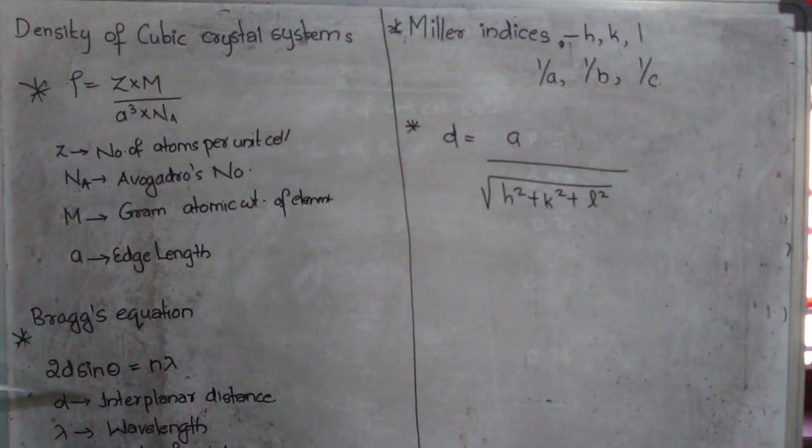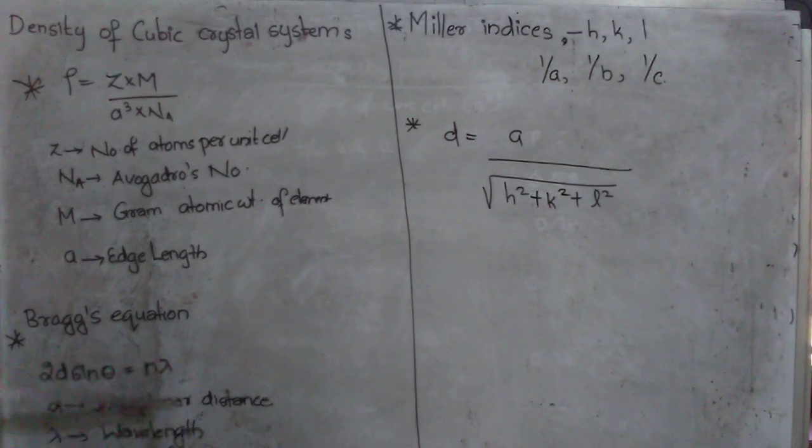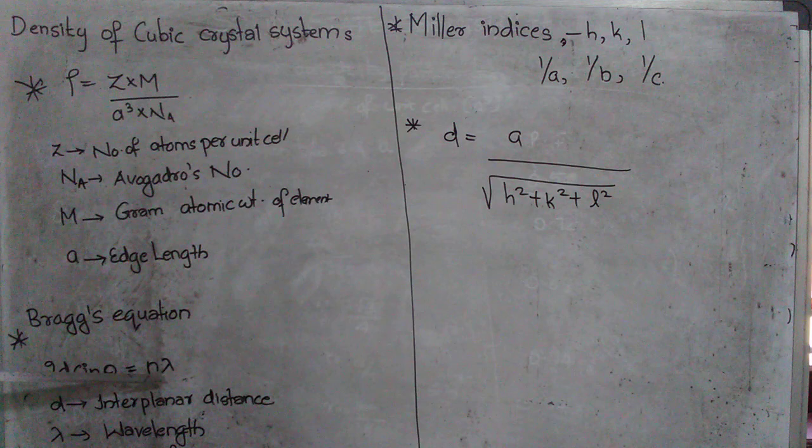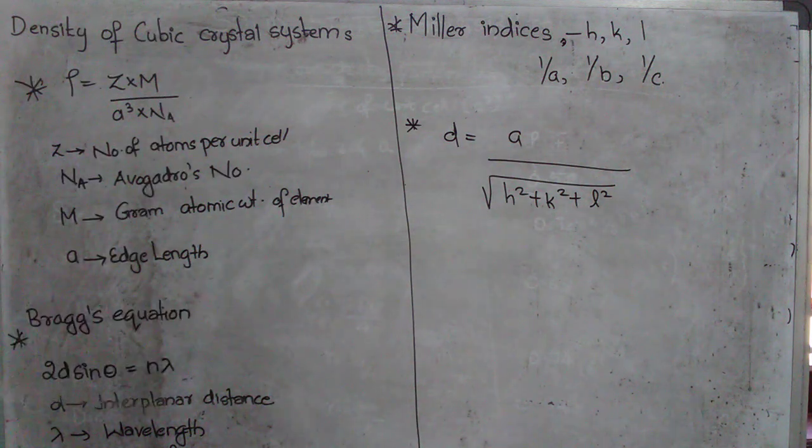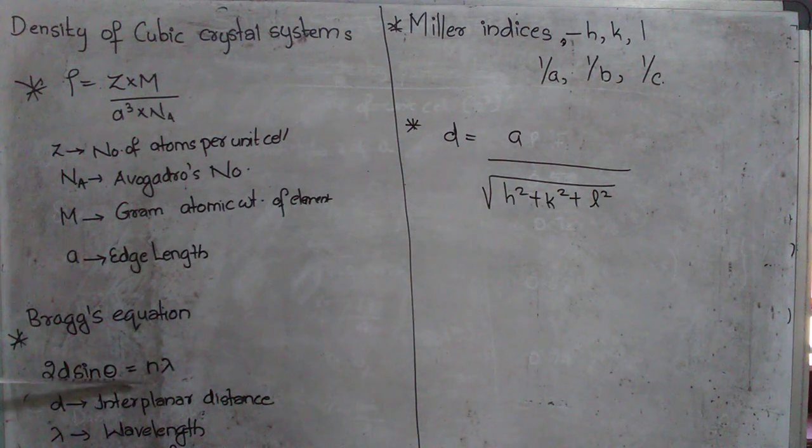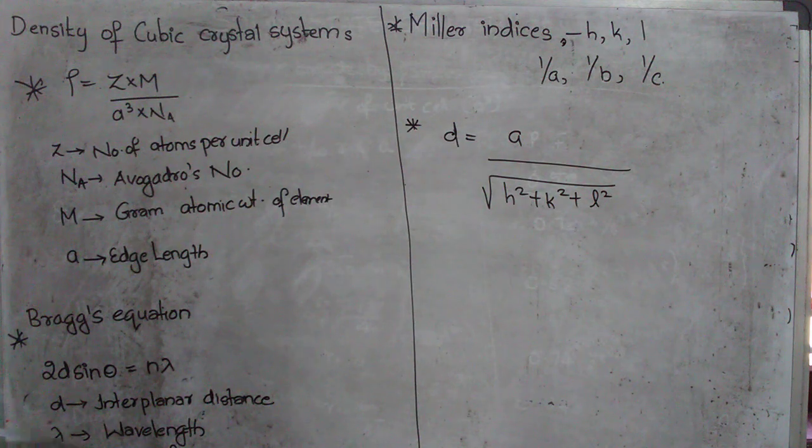Then next will be the Bragg's equation which is 2D sin theta is equal to N lambda. Here N will be the order of the spectrum. For first order of the spectrum, N will be equal to 1. We all know what was the Bragg's experiment. We need not go into details. We just need to study this equation. Now D is actually the interplanar distance. Lambda will be the wavelength and theta will be the angle of incidence. So this is Bragg's equation.